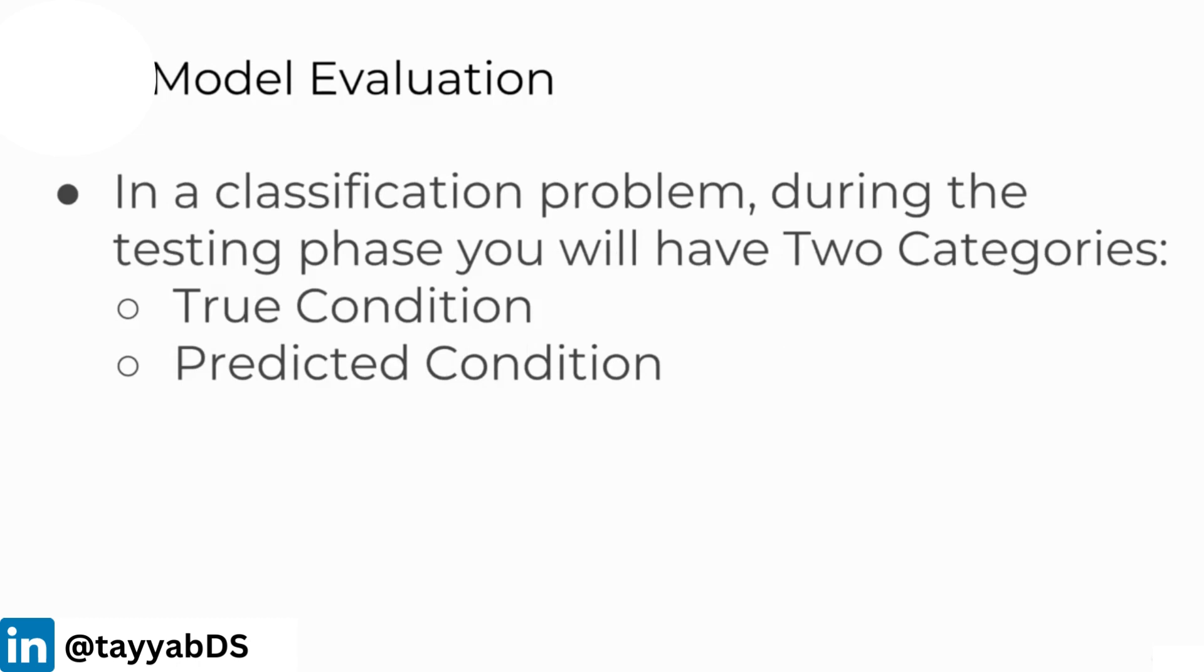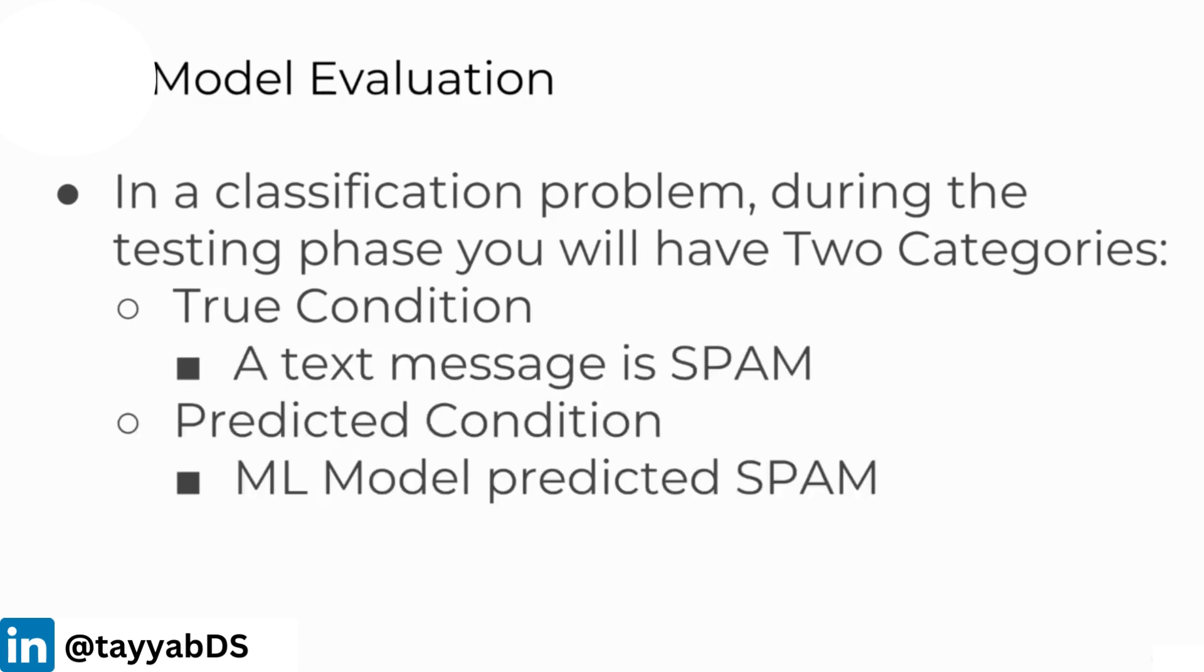In a classification problem, during the testing phase, you're going to have two main categories: the true condition and the predicted condition. For example, the true condition of a text message could be that it is spam. The predicted condition is what your machine learning model predicted, such as predicting that that text message was spam. Keep in mind, it could have also predicted it incorrectly as HAM.